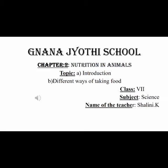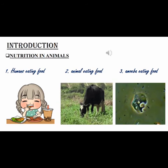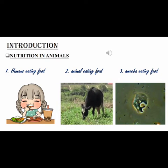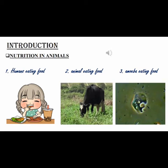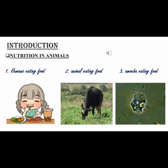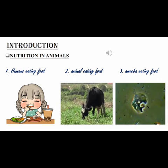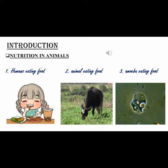In this chapter we will learn about the mode of nutrition in animals and the process of digestion in various organisms like humans, ruminants, and amoeba. You can make out in the picture: humans eating food, a cow eating grass, and amoeba eating food - you can see all this in the small video clip.